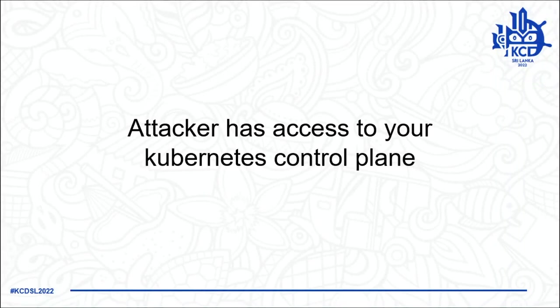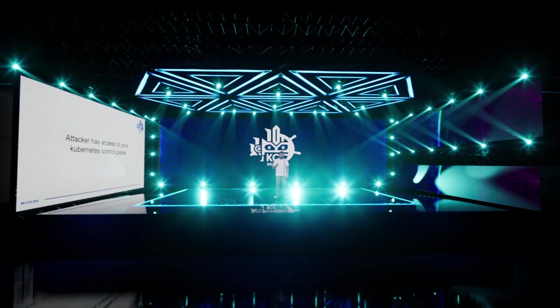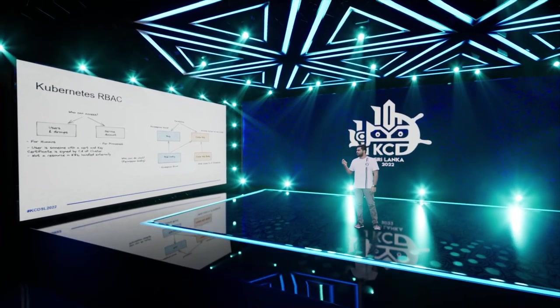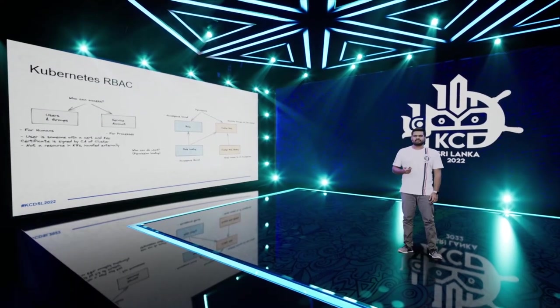The next scenario is the attacker has access to your Kubernetes control plane — they've gotten through your network and now have access to the control plane infrastructure. Before discussing mitigations, let's go through what Kubernetes RBAC is and who can do what things.